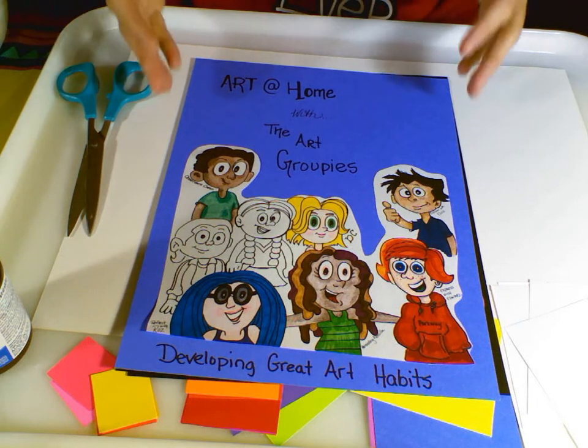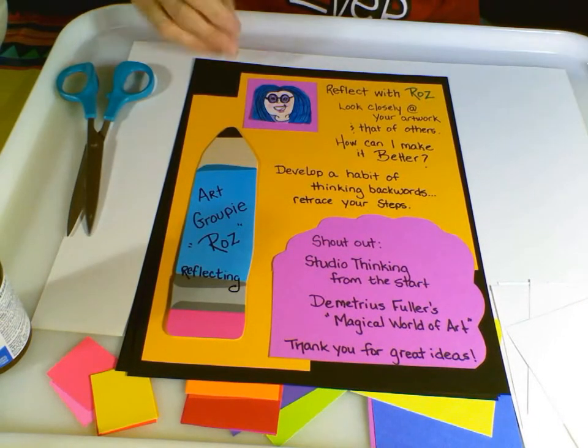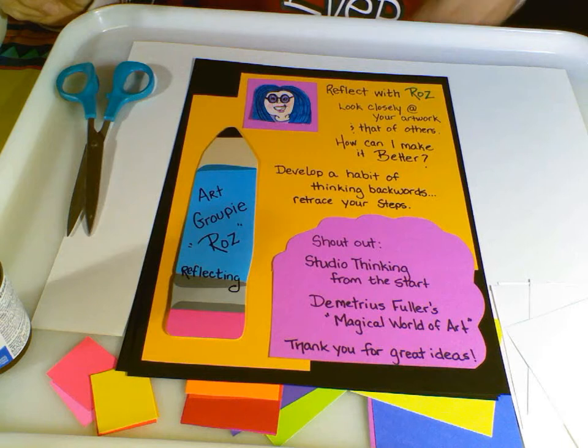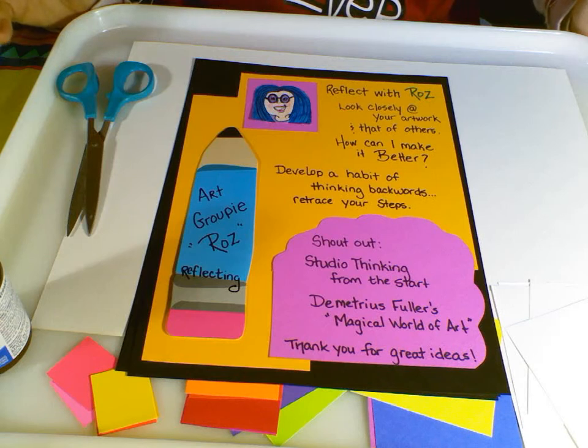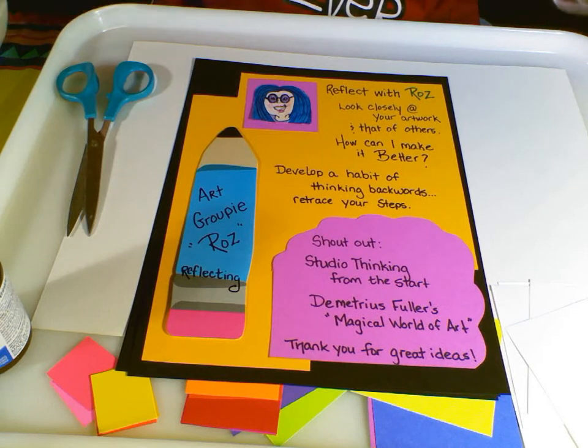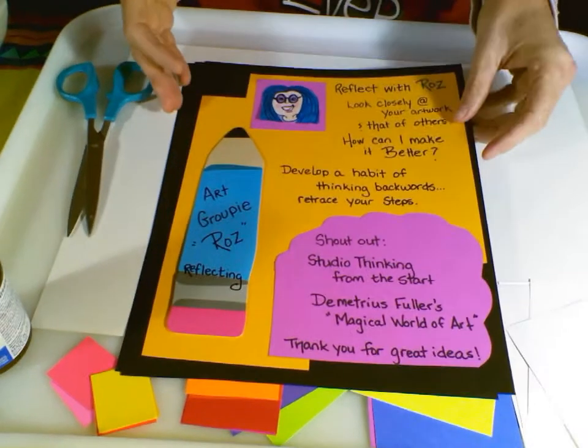Today we're going to meet two people. One is Roz. We're going to reflect with Roz, look closely at our artwork and others, maybe someone special. How can I make it better? How can I develop a habit of thinking backwards and retracing my steps? So Roz is number one on who we're going to meet today.